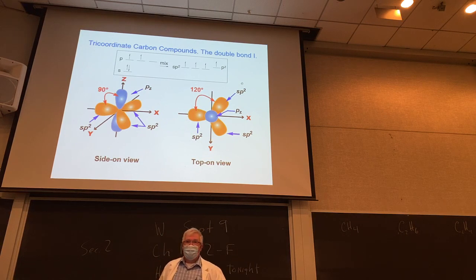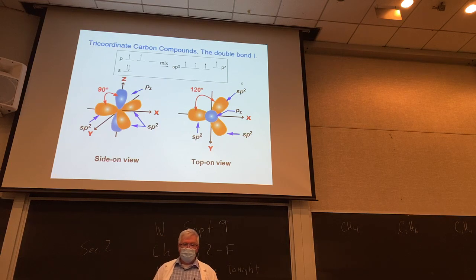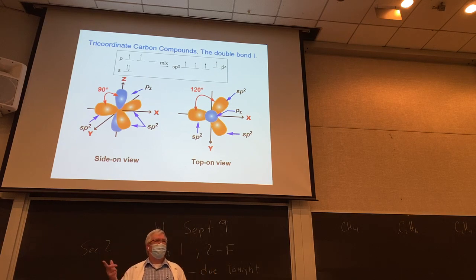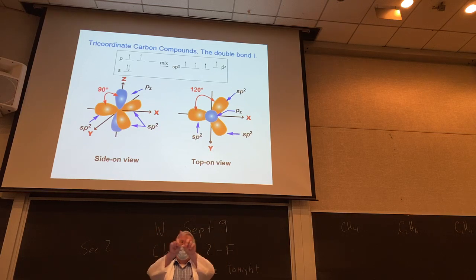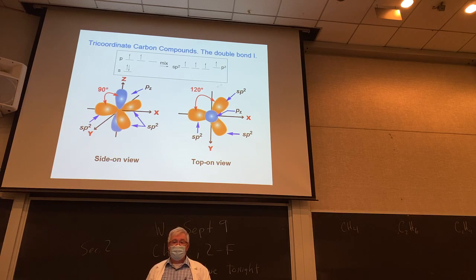How about ethylene, C₂H₄? There we have a double bond between the two carbons, so we're going to mix just three of the atomic orbitals — the low energy s and just two of the p's — and create three equivalent sp² orbitals. The pz is left alone at the upper energy level. It doesn't matter whether it's px, py, or pz, as long as the geometry of the two are sideways to each other. Three orbitals are sp² hybridized and one is left behind.